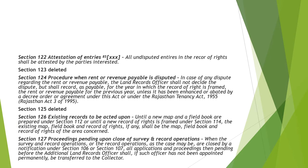Section 122 — Attestation of entries: all undisputed entries in the record of rights shall be attested by the parties interested. Section 124 talks about the procedure when rent or revenue payable is disputed. If a dispute arises regarding the rent or revenue payable, then the land record officer will decide on such a dispute.